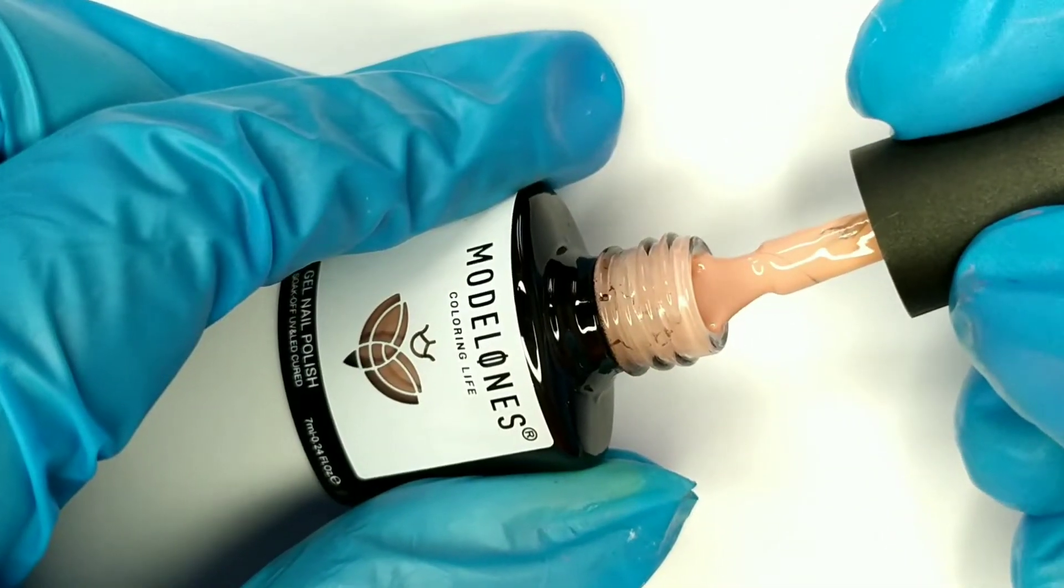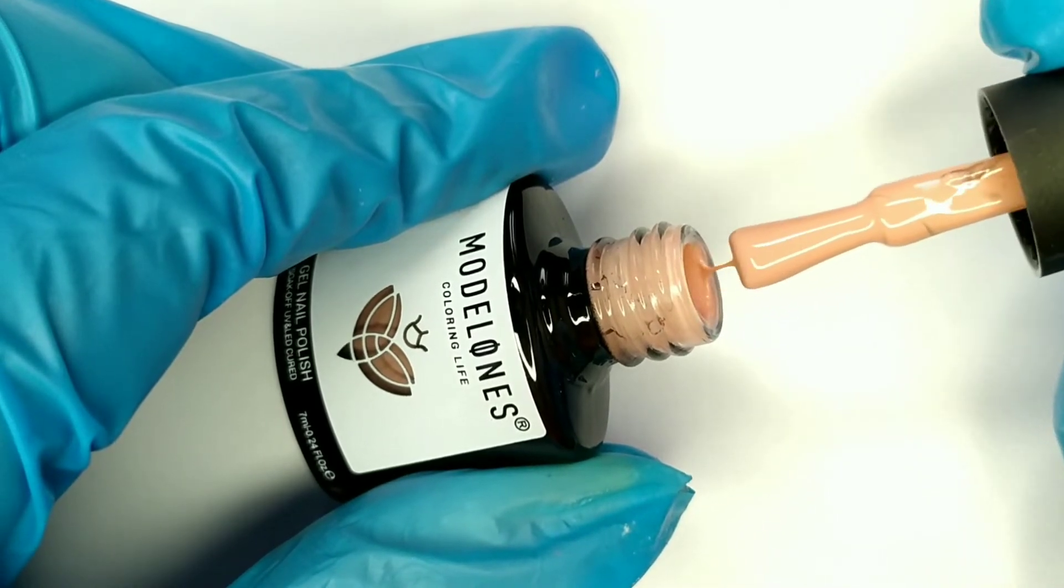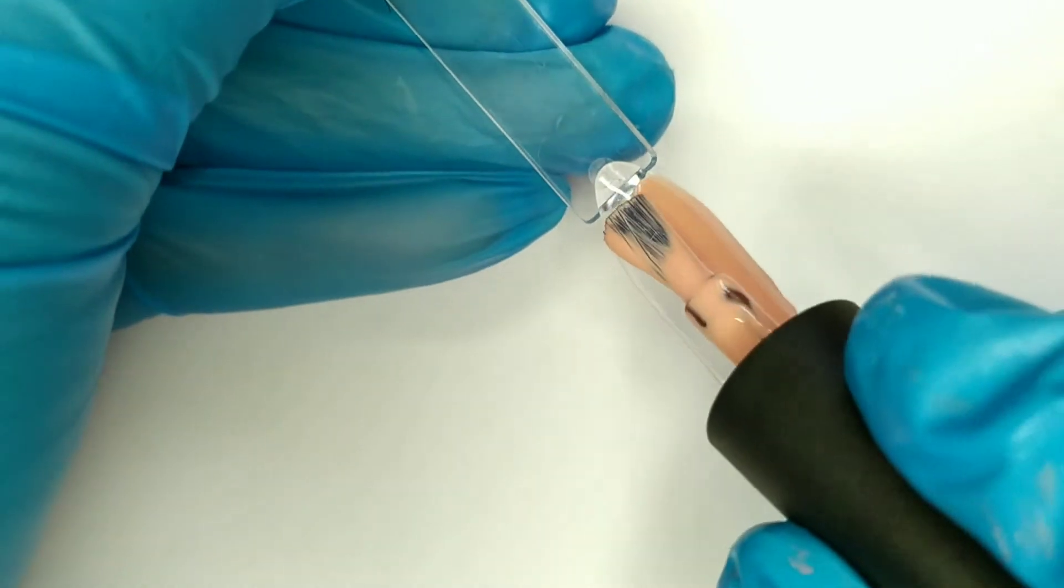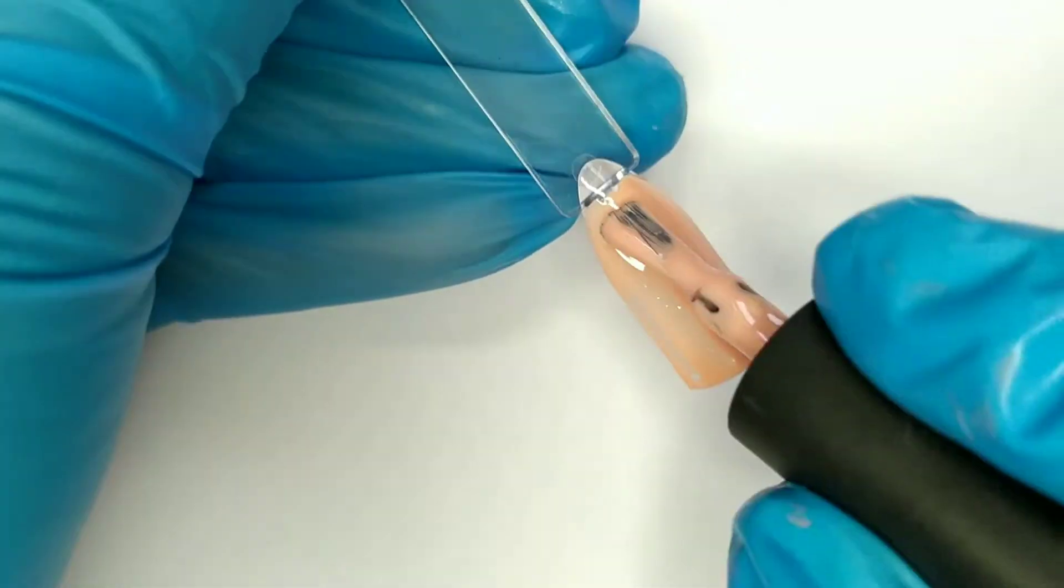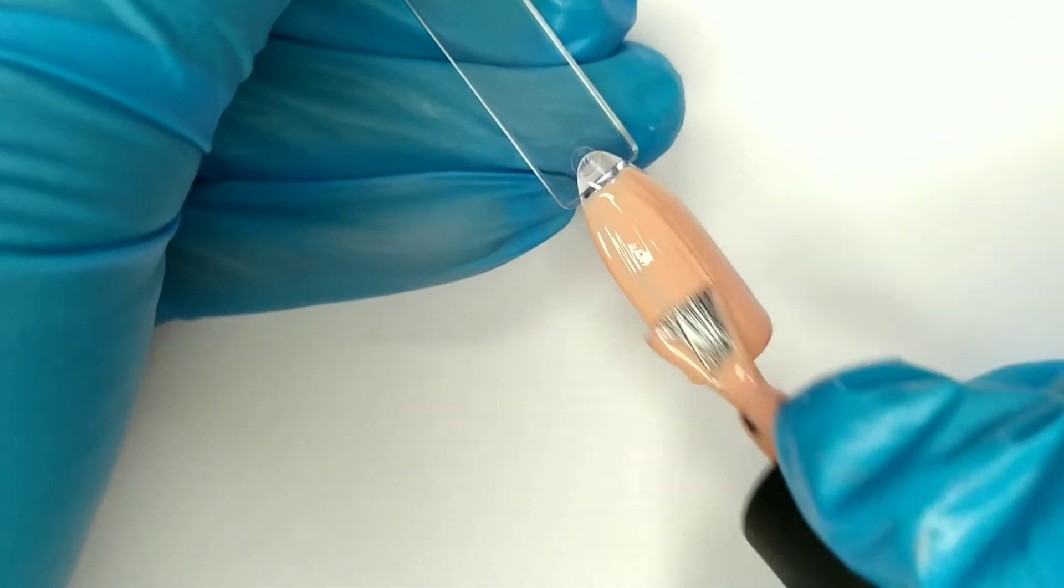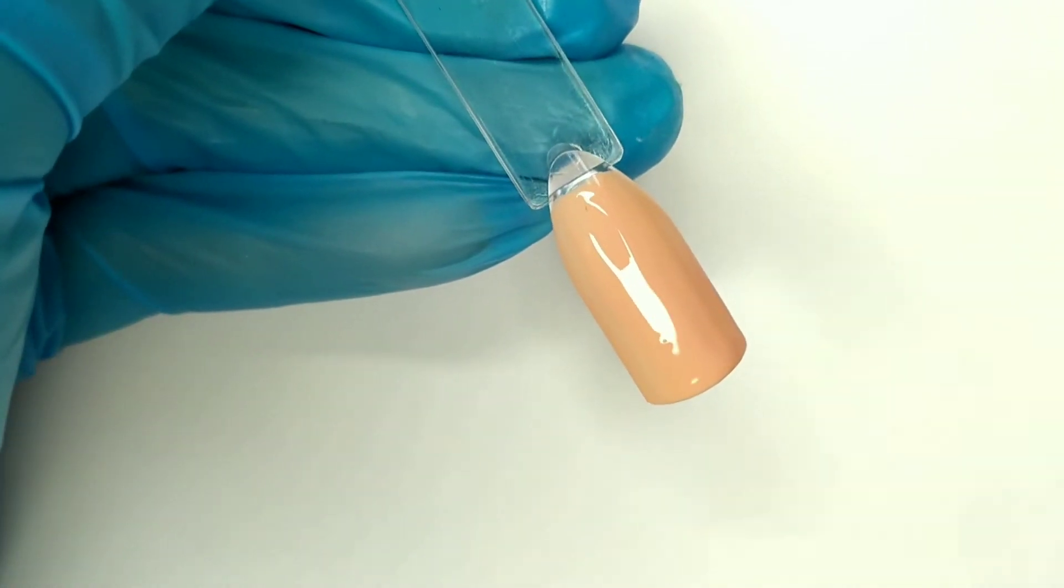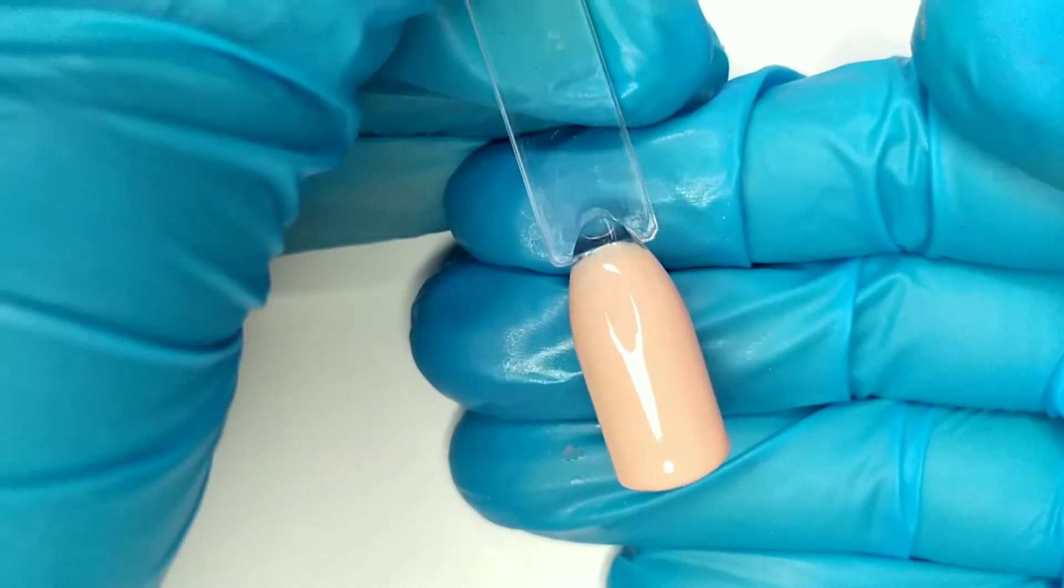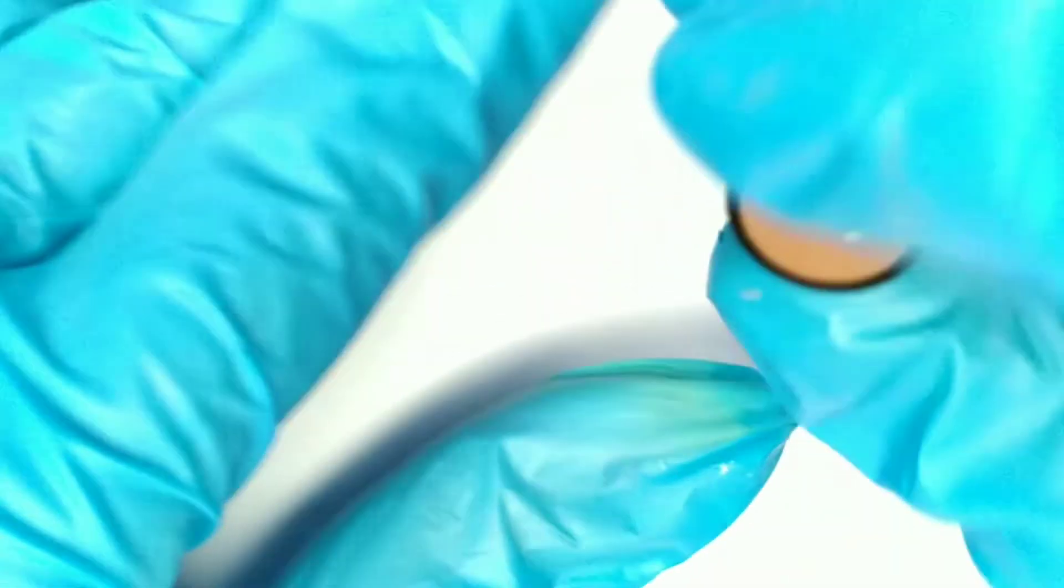The next shade is number 0018. It's kind of a pale yellowish or pale pink color - it's a lighter shade of pink. Again, it gives you full coverage in just one coat. You can clearly see even the light color gives you full coverage in just one coat. One thing that I noticed with Modern Ones Gel is that they give you full coverage in just one coat.